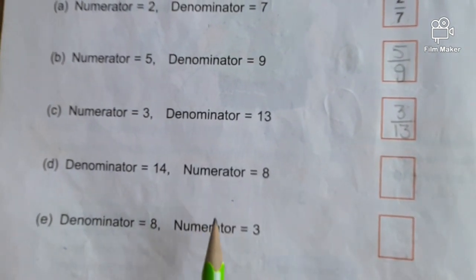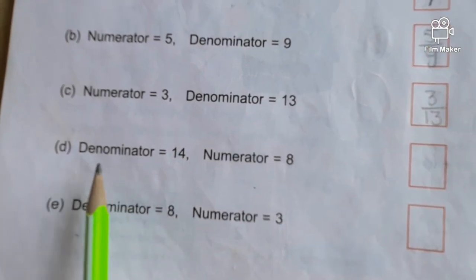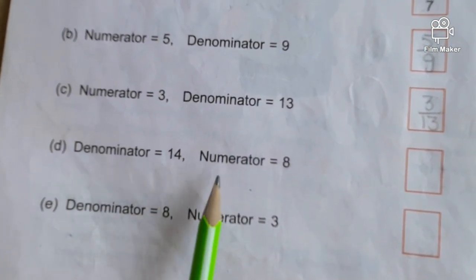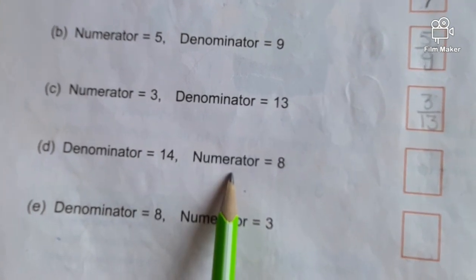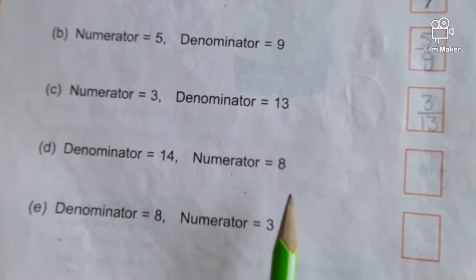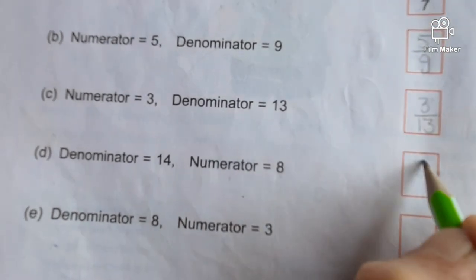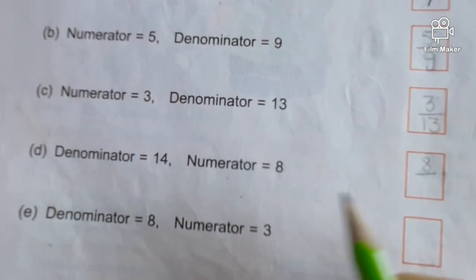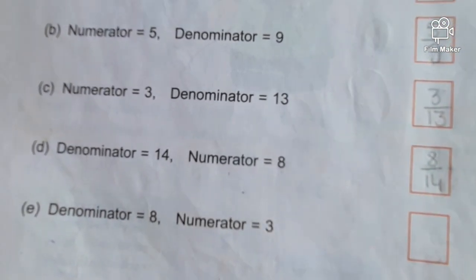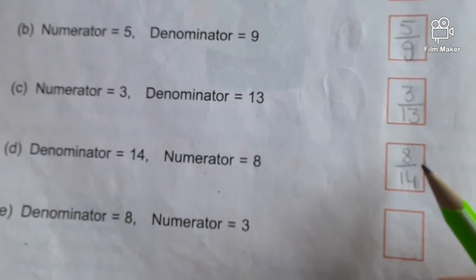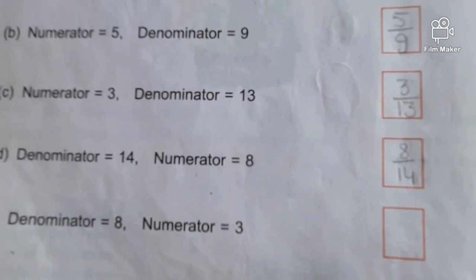So like this you can do parts D and E, but here the sequence is changed — denominator is given first and numerator is given after. But when we are writing the fraction, be careful: numerator 8 goes on top, and denominator 14 goes below, so the fraction is 8 by 14. Like this, complete all the parts.